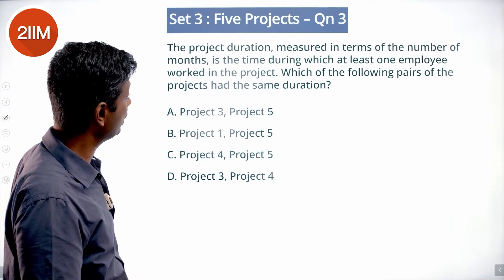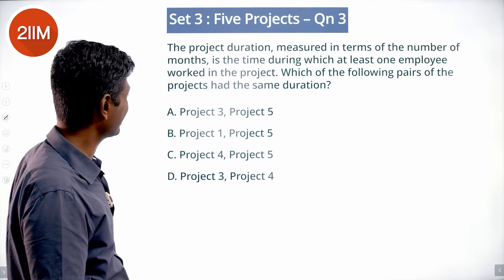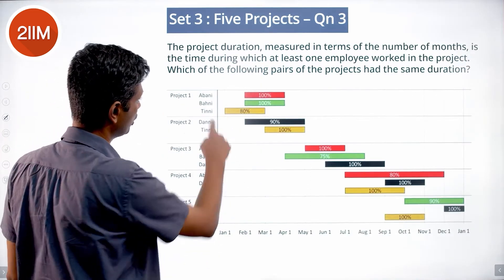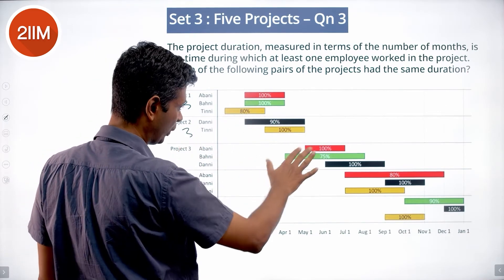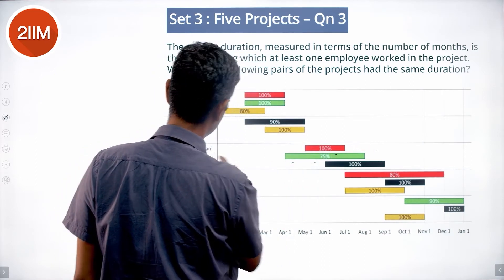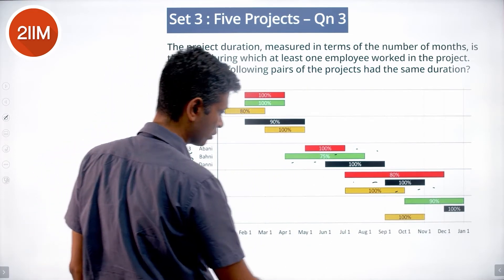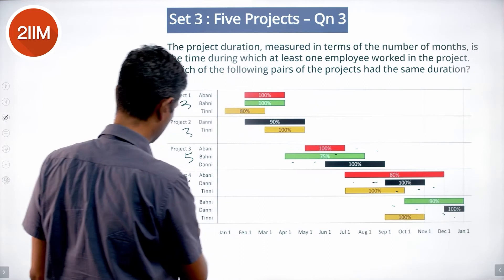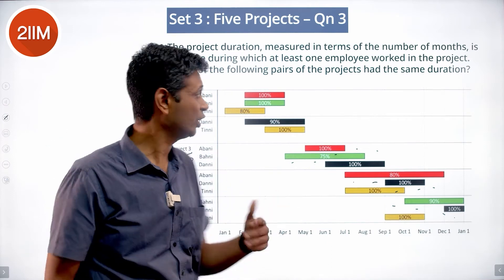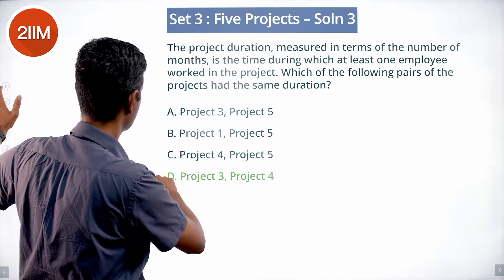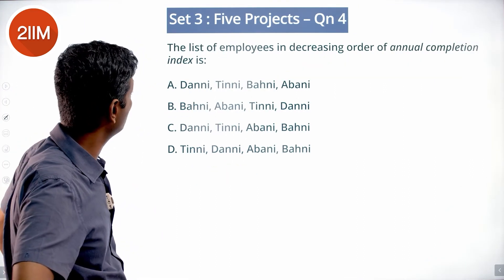The project duration is measured in terms of the number of months during which at least one employee worked in the project. Which of the following pairs of projects had the same duration? Project 1: 3 months. Project 2: 3 months. Project 3: 5 months. Project 4: 5 months. Project 5: 4 months. So projects 1 and 2 had the same duration, and projects 3 and 4 had the same duration. The answer is 3 and 4.